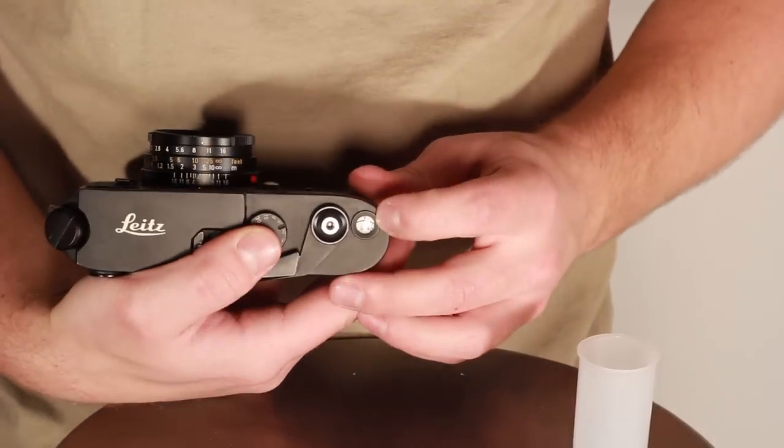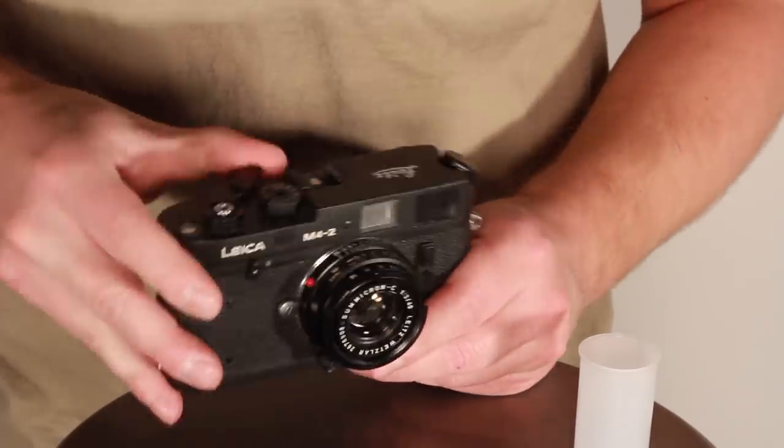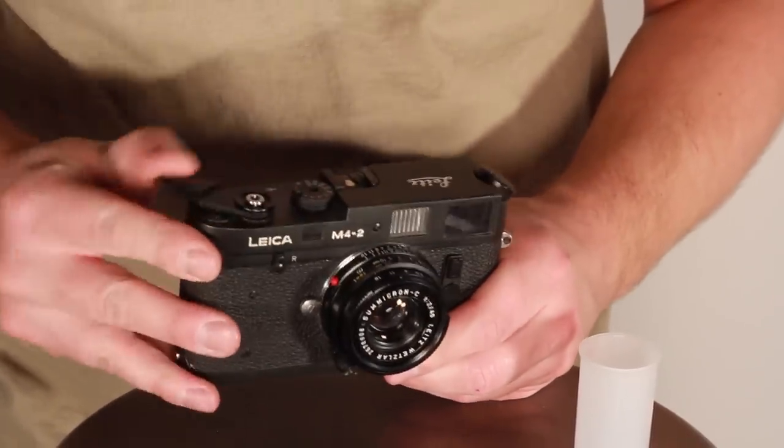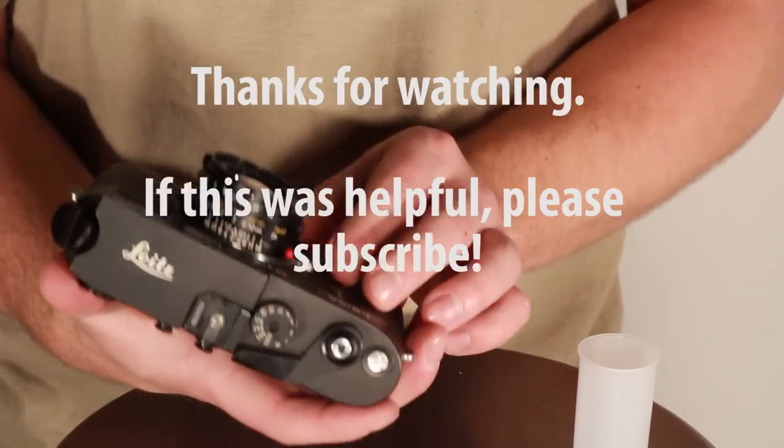On the top here, where it shows our frames, it shows that we're at negative 2. So we'll go ahead and run through a couple of frames until the camera says 0, like it does now, and we're ready to go.